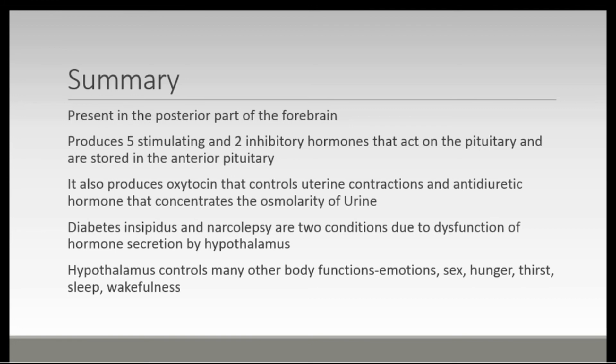In summary, we have talked about the anatomy, the functions, and the dysfunctions of the hypothalamus. The hypothalamus is present in the posterior part of the forebrain and produces five stimulating and two inhibitory hormones that act on the anterior pituitary. It also produces oxytocin, which controls uterine contractions and the mammary gland, and antidiuretic hormone, which concentrates the osmolarity of the urine — both stored in the posterior pituitary. Diabetes insipidus and narcolepsy are two conditions that occur due to dysfunction of hormone secretion by the hypothalamus.